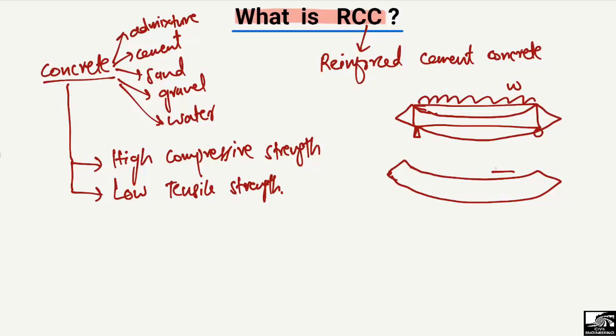At the top of the deflected beam we have compressive stresses, represented by C, while at the bottom we have tension. The bottom fibers of the beam are extended as compared to the top, which is contracted. Since concrete has low tensile strength, cracks will appear at the lower part of the beam.